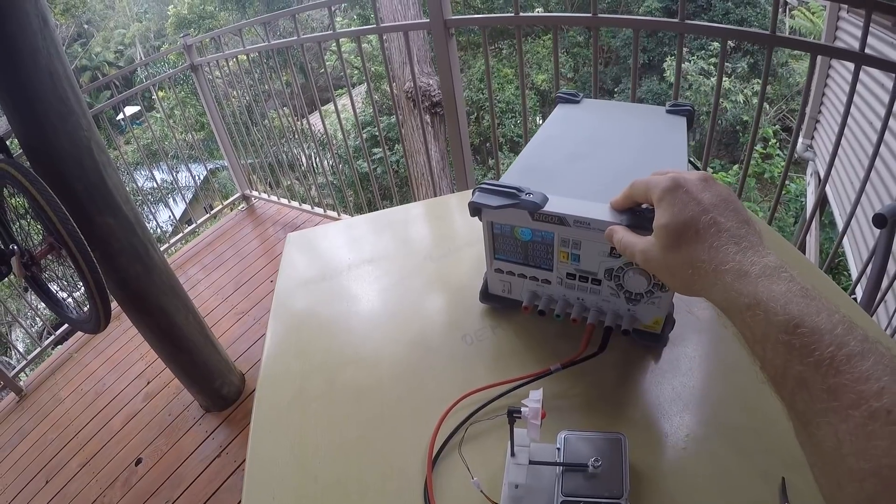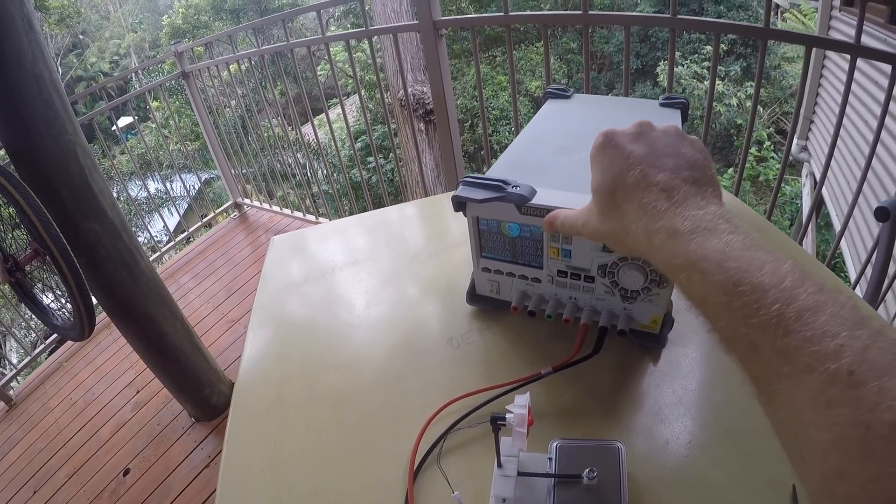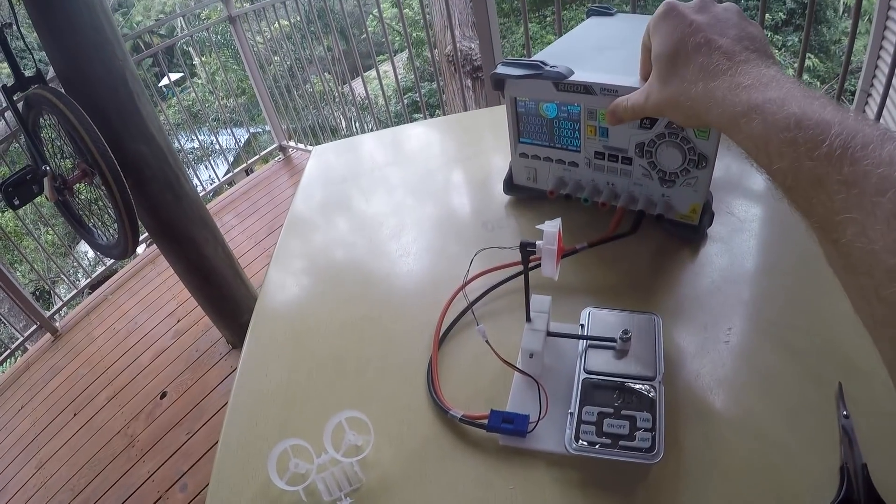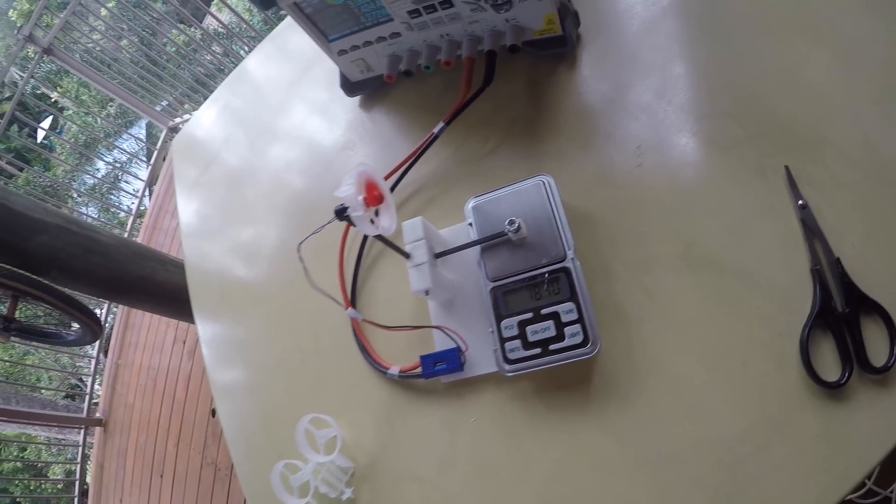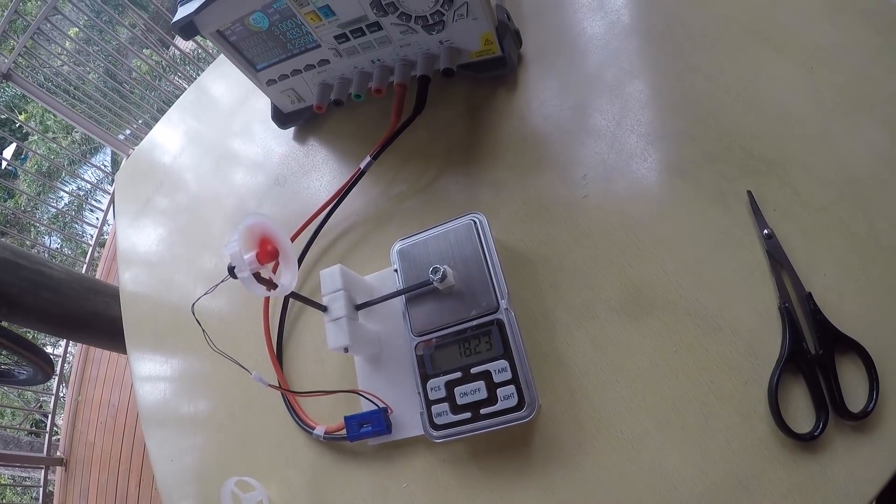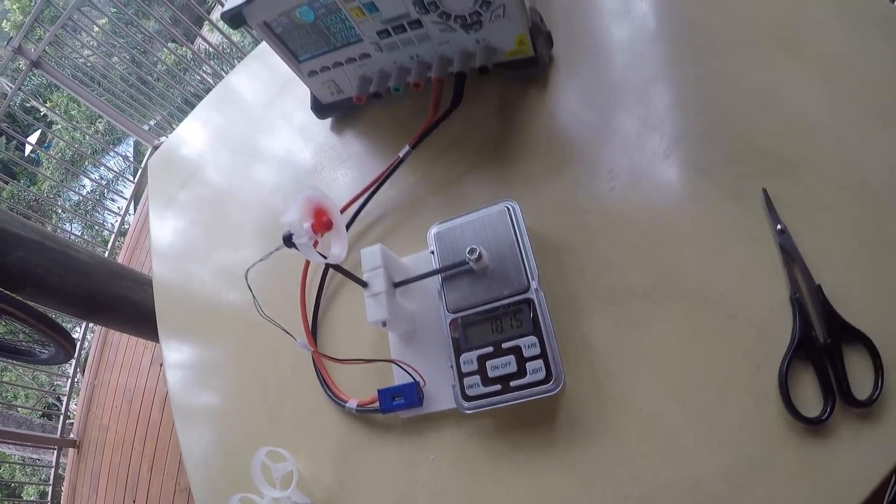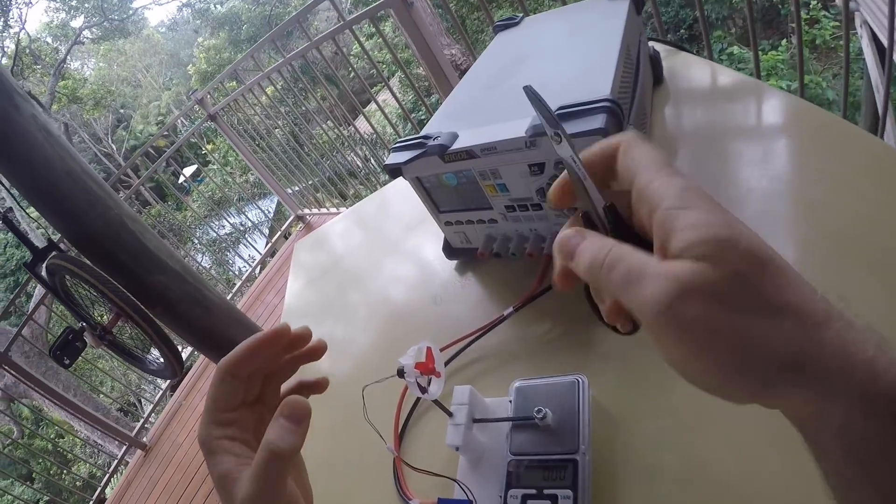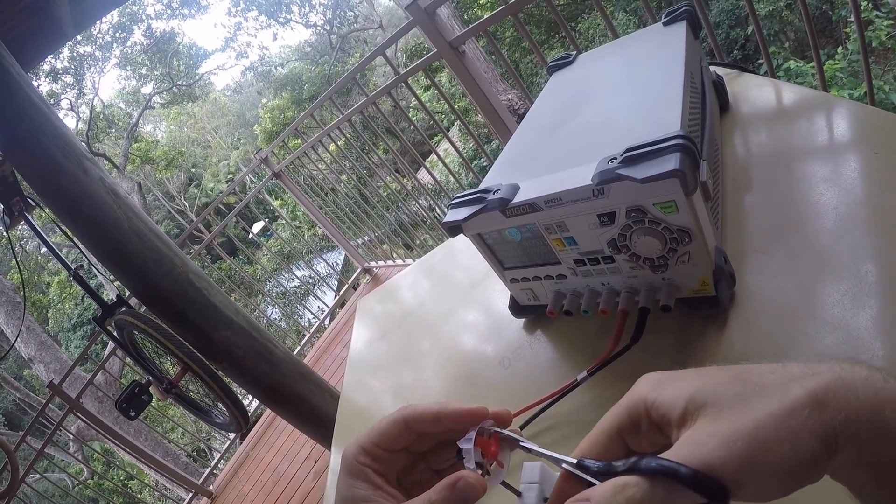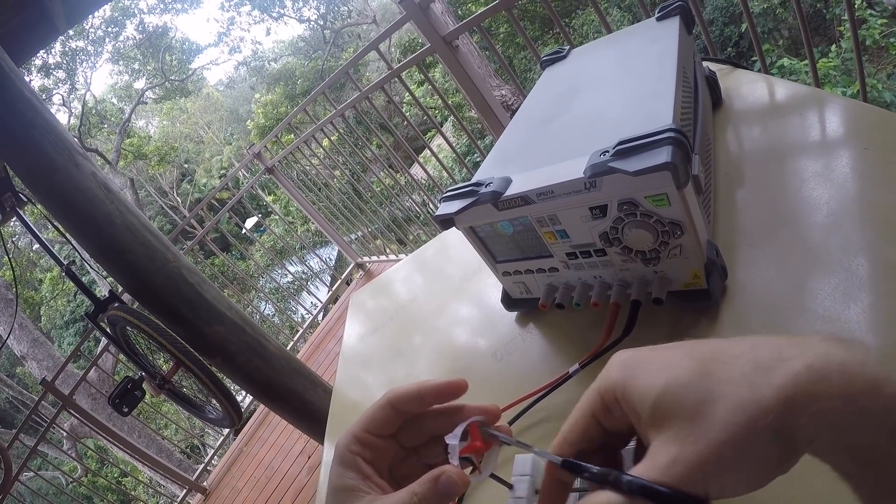E10 prop, 3 volts. Just over 18 grams static thrust. Now I change as little as possible on the setup, just snip off the duct.